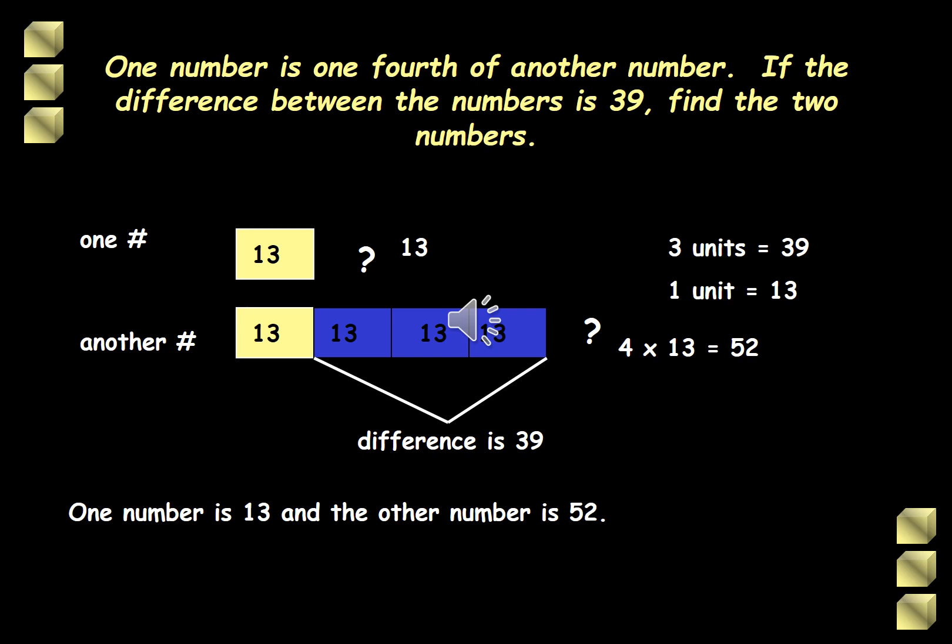If you look at the bar models, it's pretty obvious that the 3 units account for the difference. So we have here 3 units that's equal to 39. And we want to get the value of each unit. We divide 39 by 3. That gives us 13 for each unit.